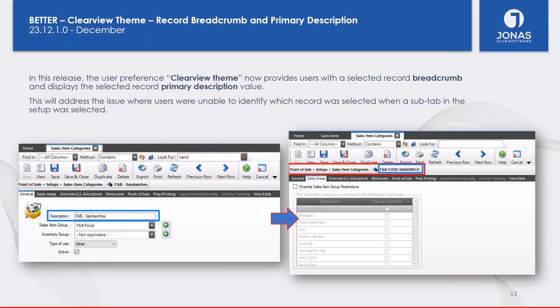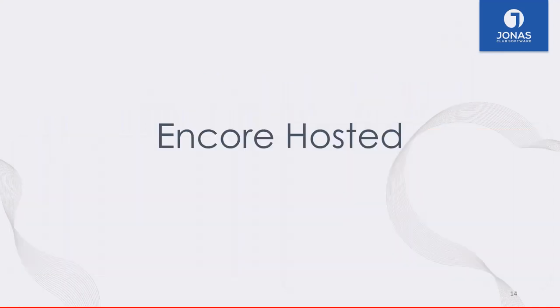The record breadcrumb allows you to see which record you have selected. In the use case where you're in a sub-tab of a setup item — for example, in a sub-tab of Sales Areas — you're no longer on the general screen where you can see the main description of the item. This breadcrumb tells you which record you have highlighted in case you've forgotten which record you're viewing. It's a nice quality-of-life feature.